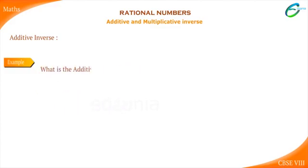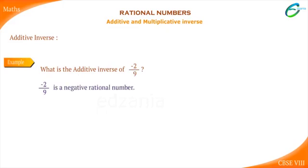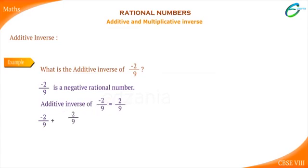What is the additive inverse of minus 2 upon 9? As minus 2 upon 9 is a negative rational number, the additive inverse of minus 2 upon 9 is 2 upon 9, because minus 2 upon 9 plus 2 upon 9 is equal to zero.